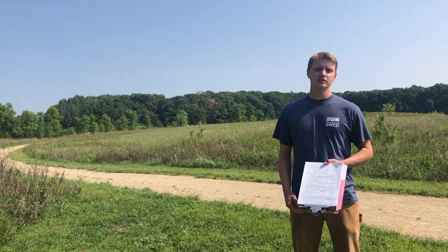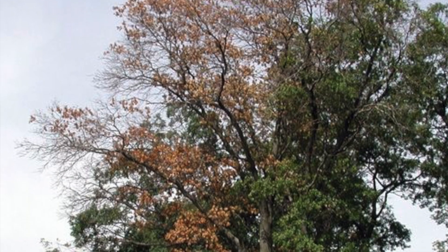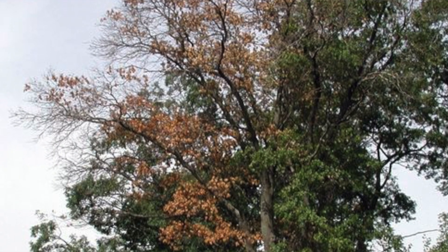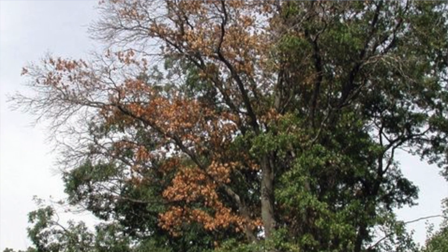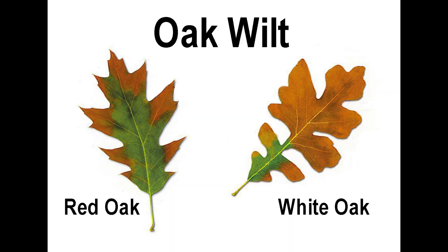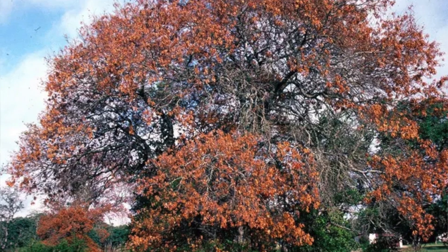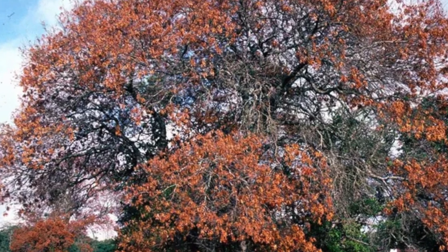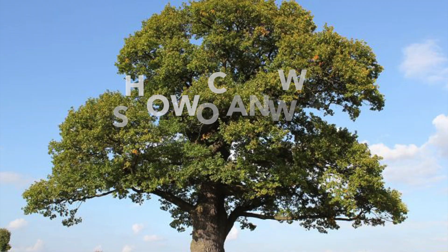Symptoms include rapid wilting starting at the top and outer portions of the tree and progressing down. Leaves brown from the tips and edges towards the base. Complete wilting and leaf loss can occur in as little as four weeks.